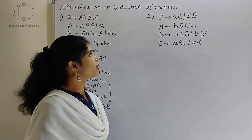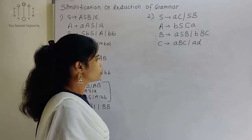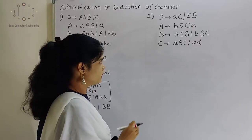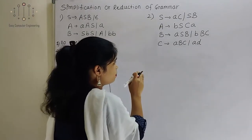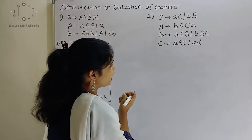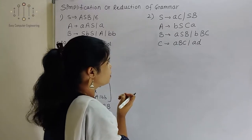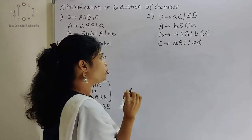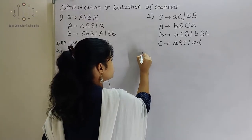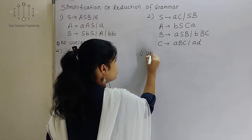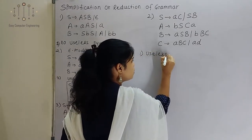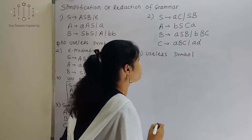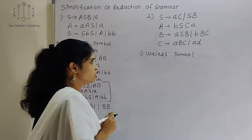Now we will see the second example — how to reduce or simplify this grammar. S tends to HC and SB. There are four variables: S, A, B, C, and terminals are small a, small b, and AD. Now first we will find useless symbols. Useless symbols are two types: non-reachable and non-generating. So we will find out non-reachable first.